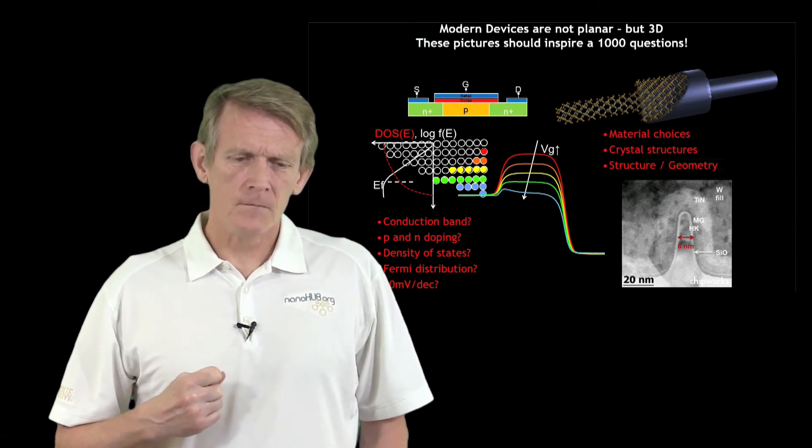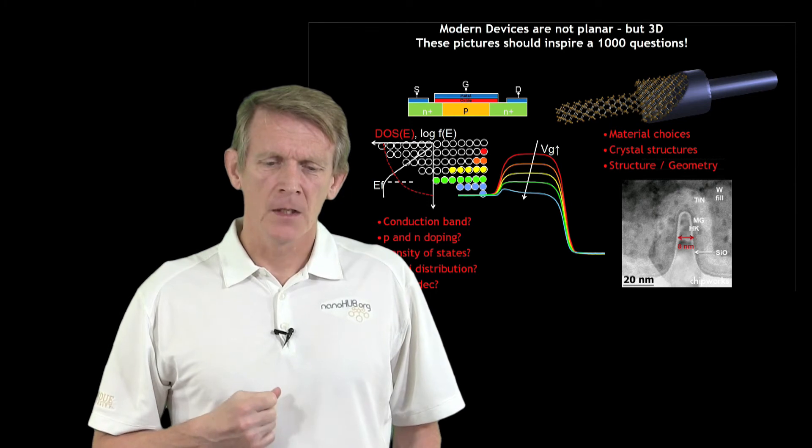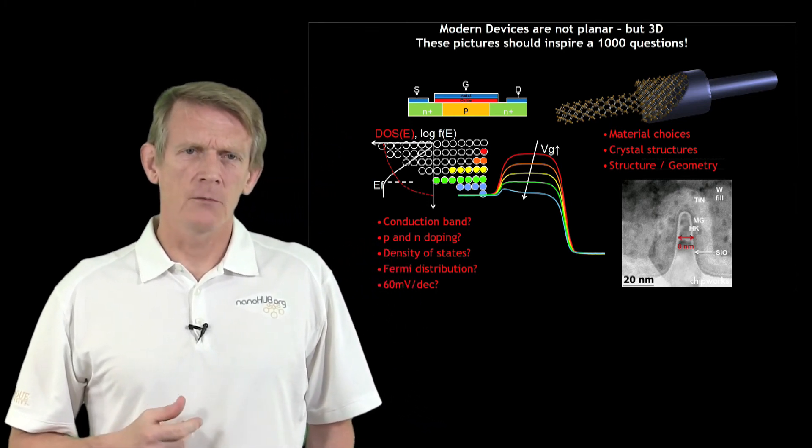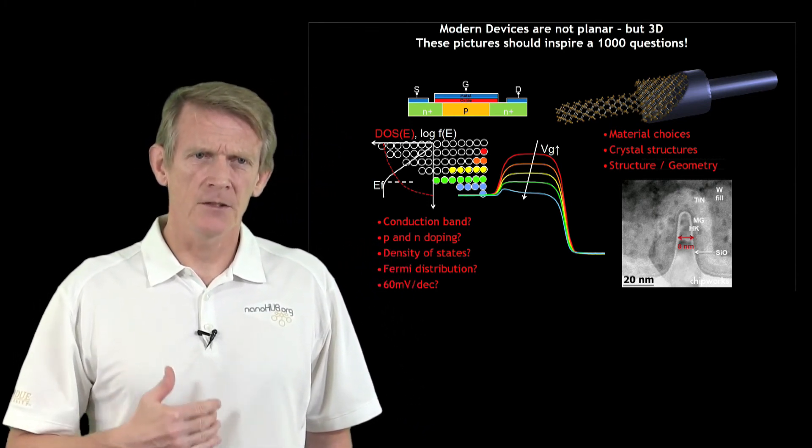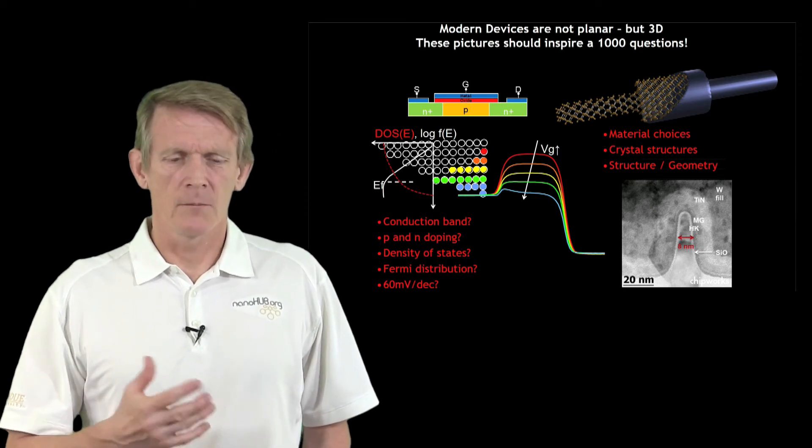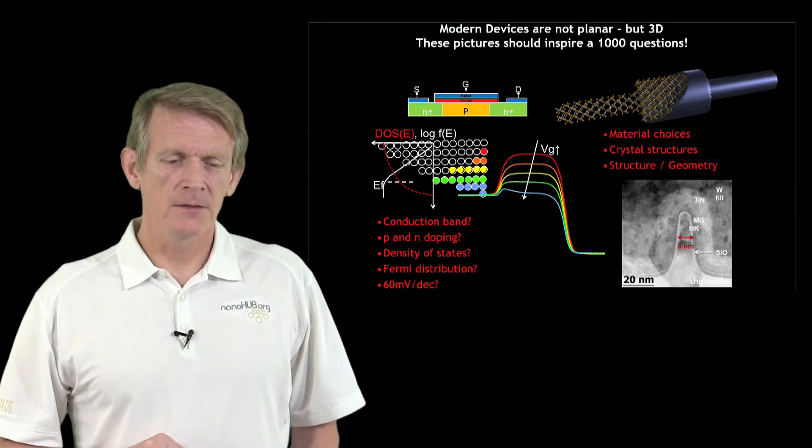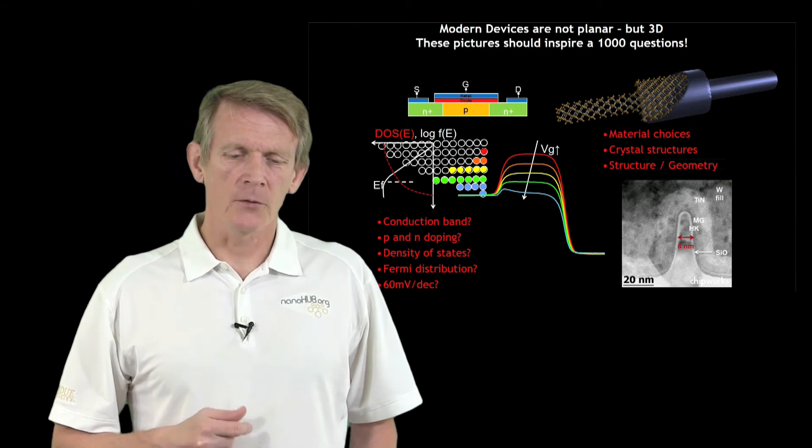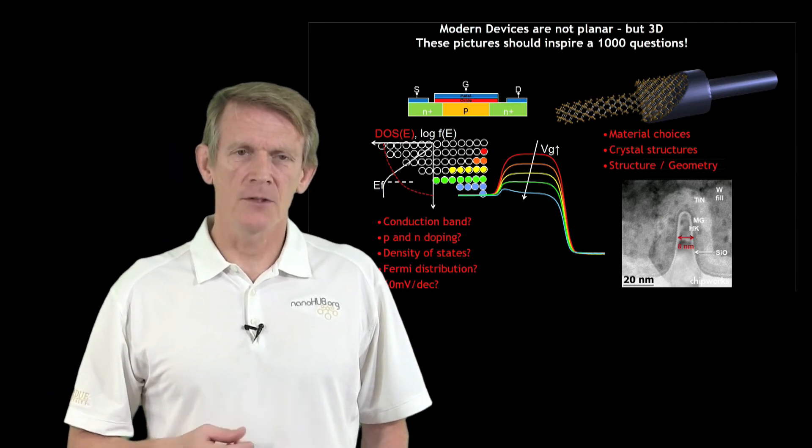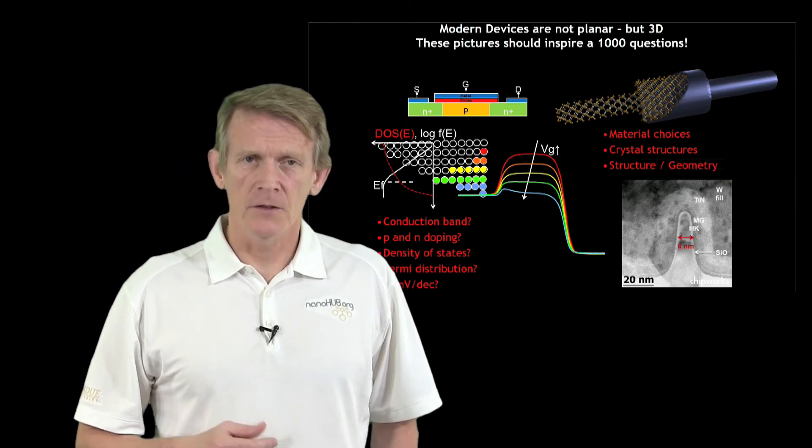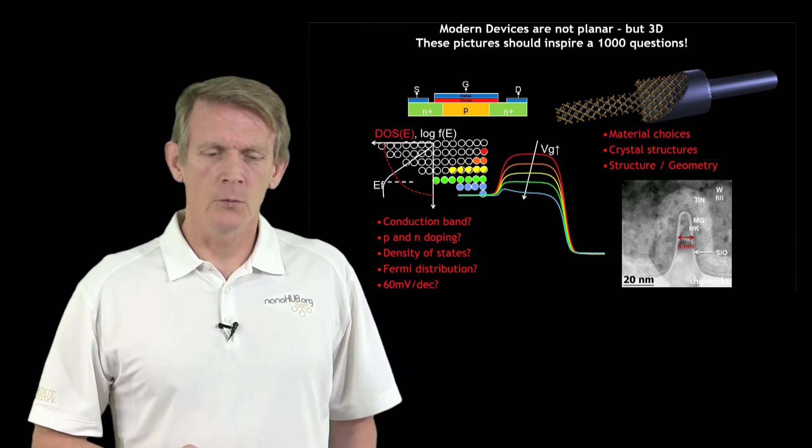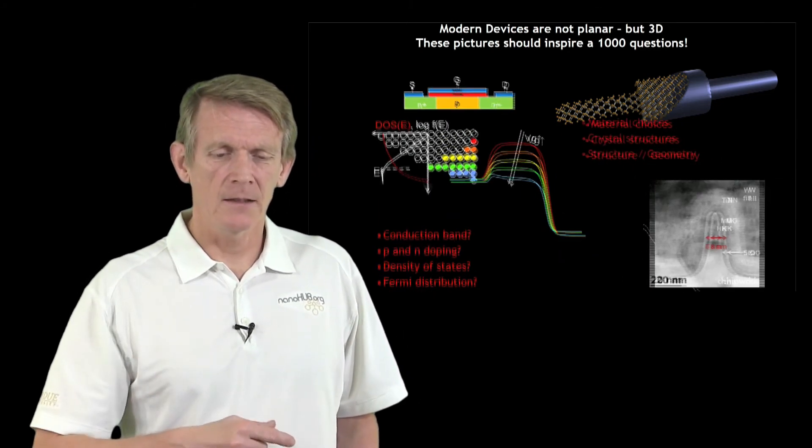As I mentioned in the introduction, today's devices are really three-dimensional devices. They're not really two-dimensional and flat. They might be in wire shape like this. We have material choices, crystal structures, geometry - the structure of the device itself. We'll cover issues like that throughout the course.